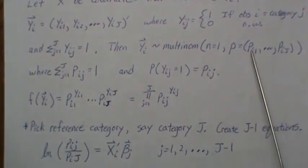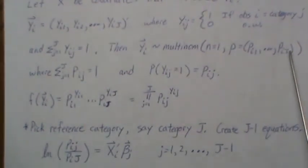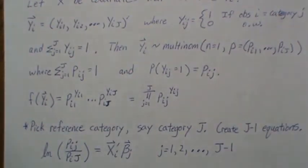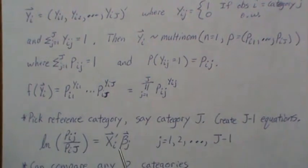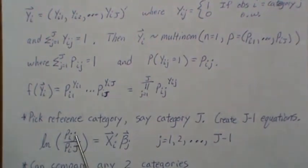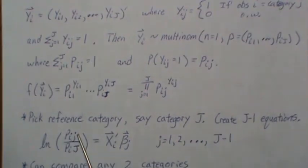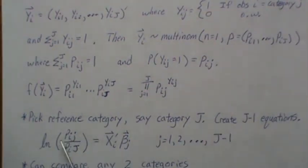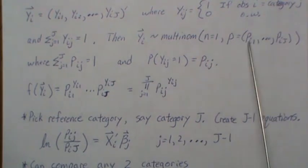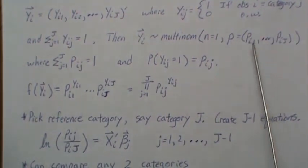Notationally, it's just easiest to pick the last category as the reference category. And so then these are the equations: the log of the jth category divided by the reference category capital J has a linear relationship. In logistic regression there were only two outcomes, so outcome one versus the other outcome is what we modeled as a linear relationship. But here we're doing it for each category, each of the J minus one categories compared against J.